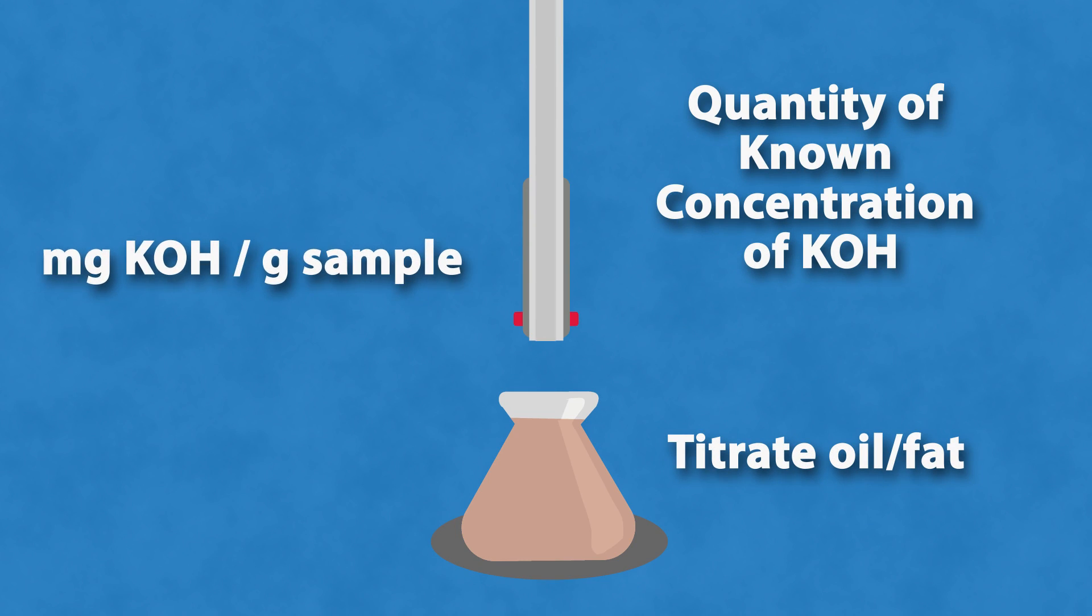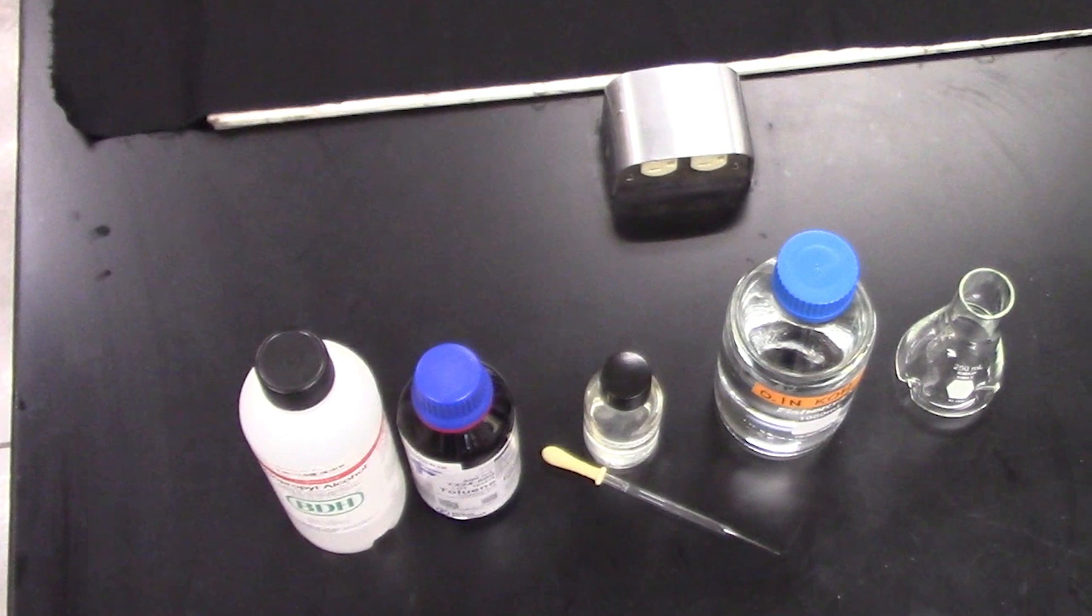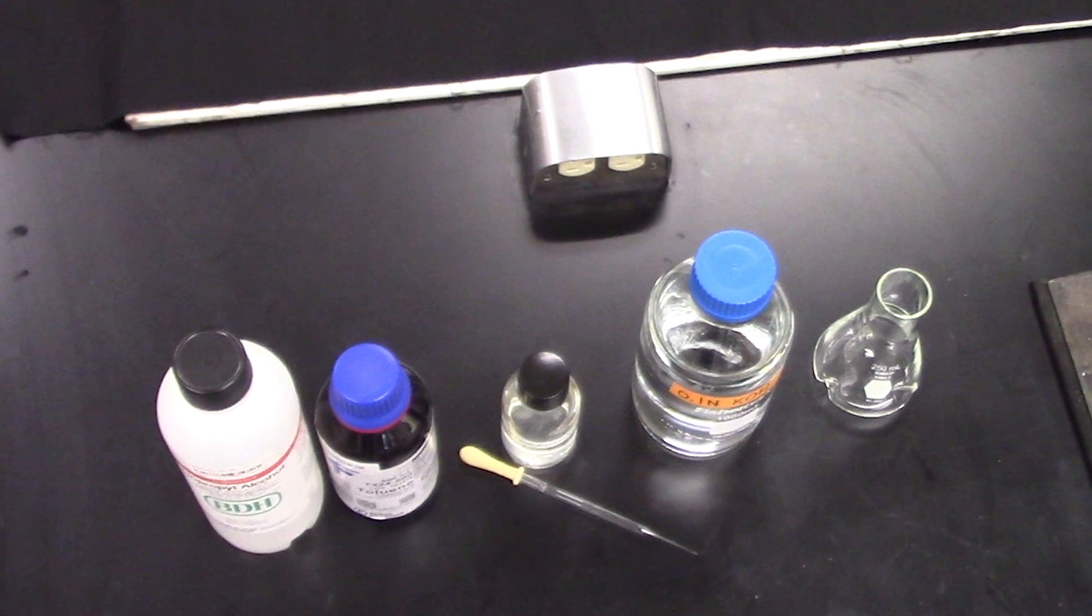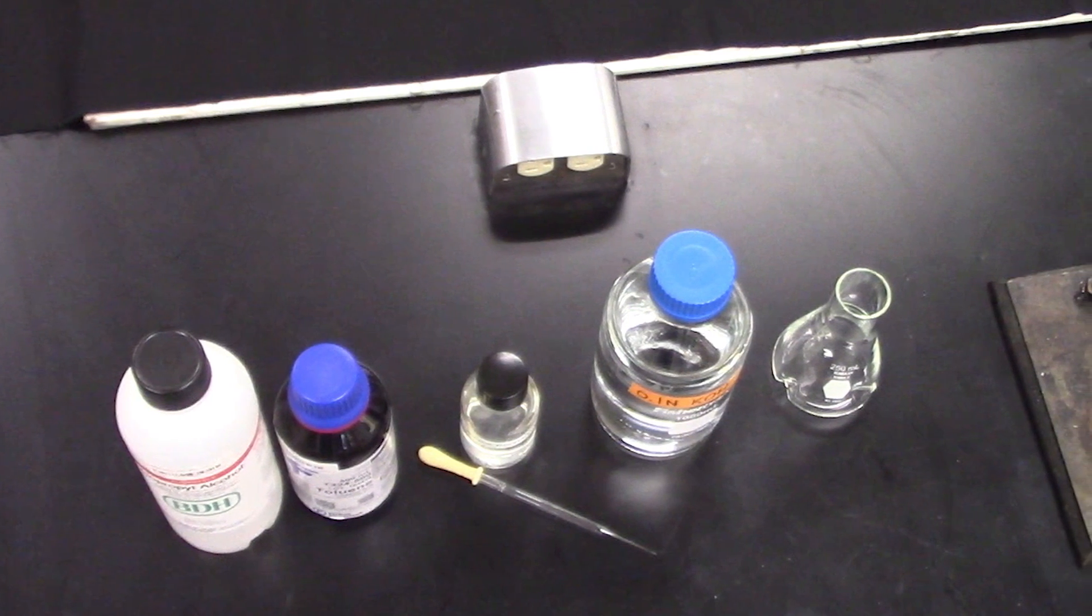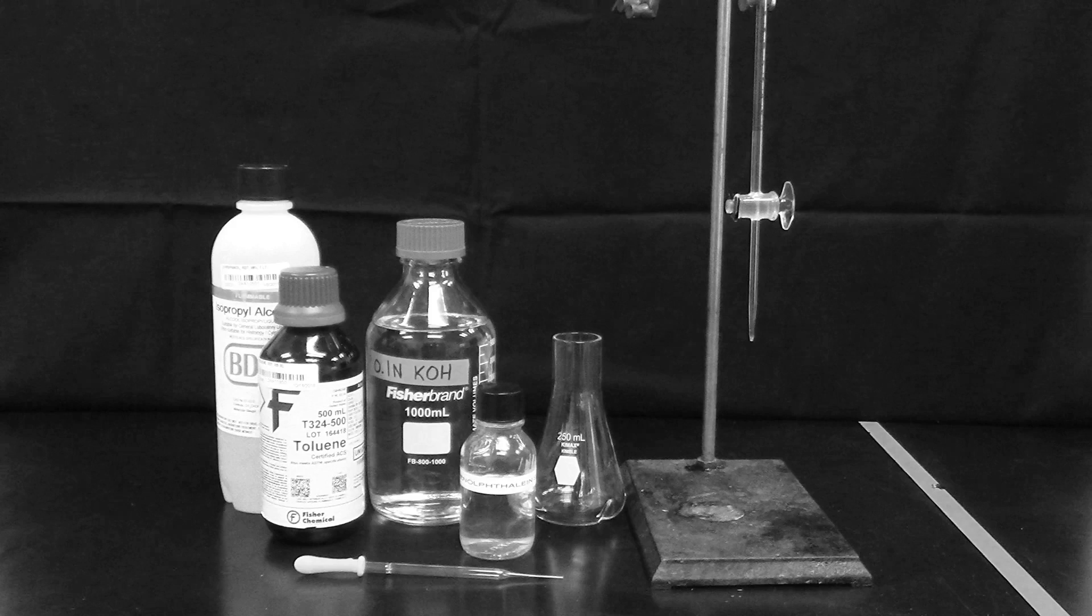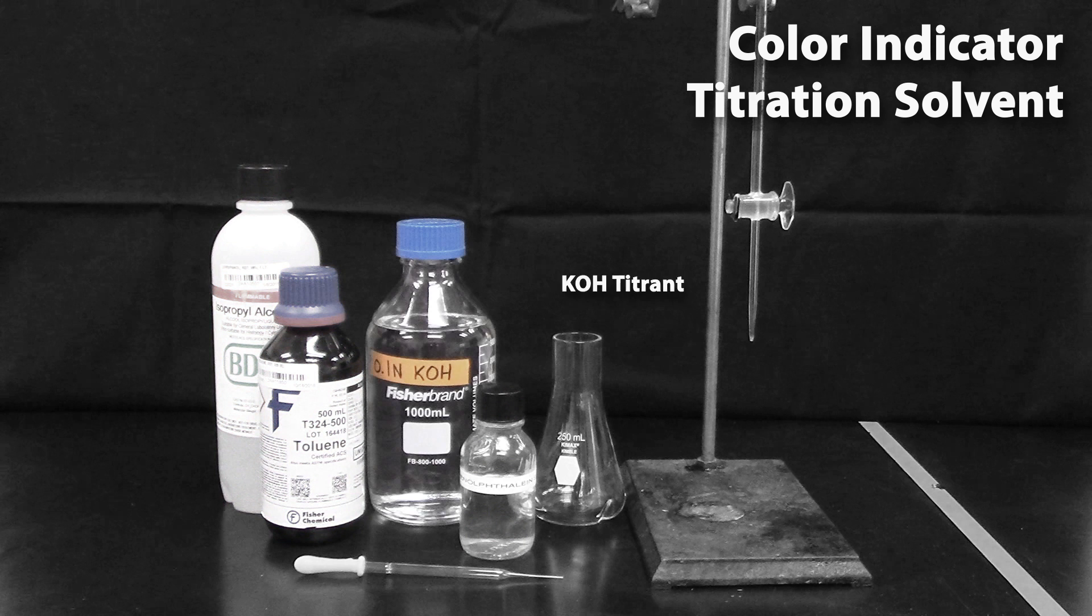The acid value is expressed in the units of milligrams of potassium hydroxide per gram of sample. Manual titration requires a color indicator such as phenolphthalein and organic solvents such as toluene or isopropyl alcohol to dissolve the sample in order to obtain a clean endpoint. Have on hand your color indicator, titration solvent, and standardized potassium hydroxide titrant.